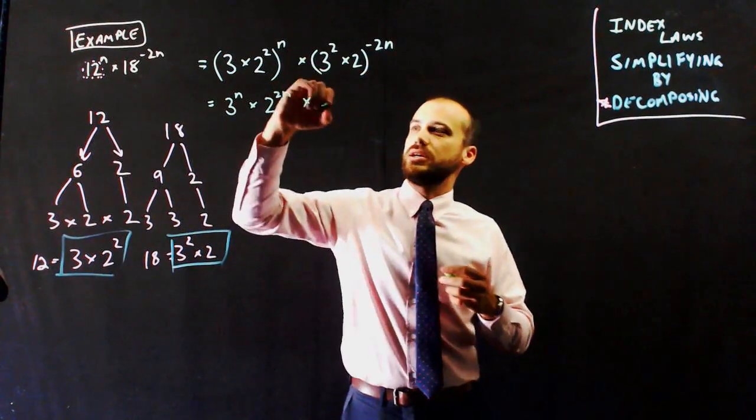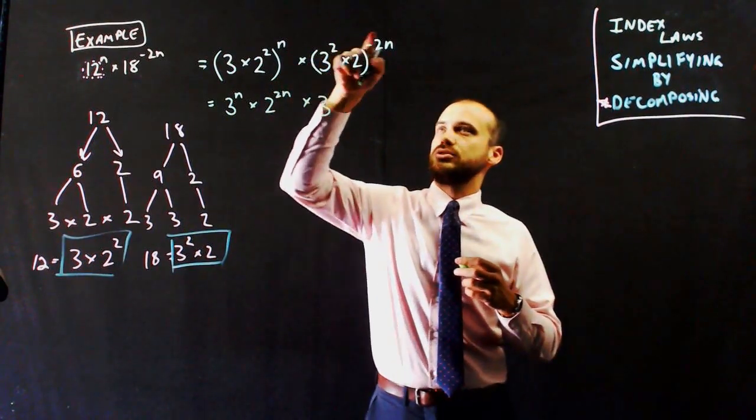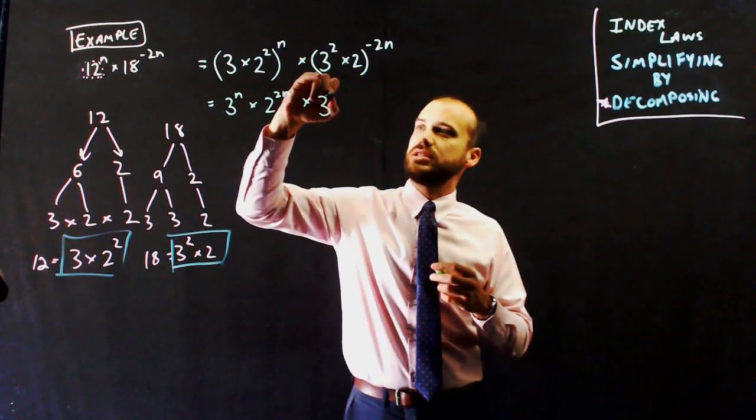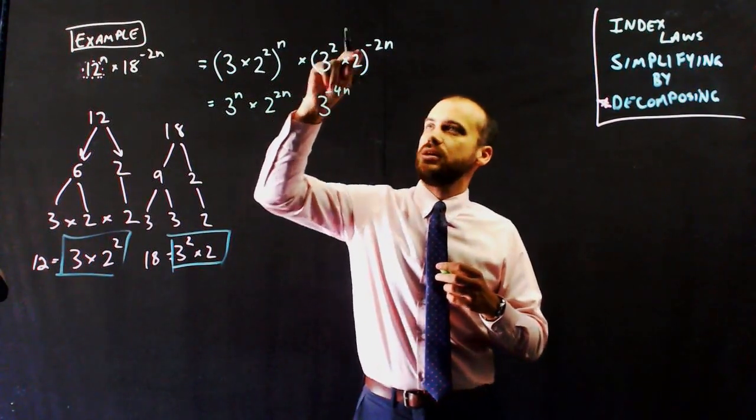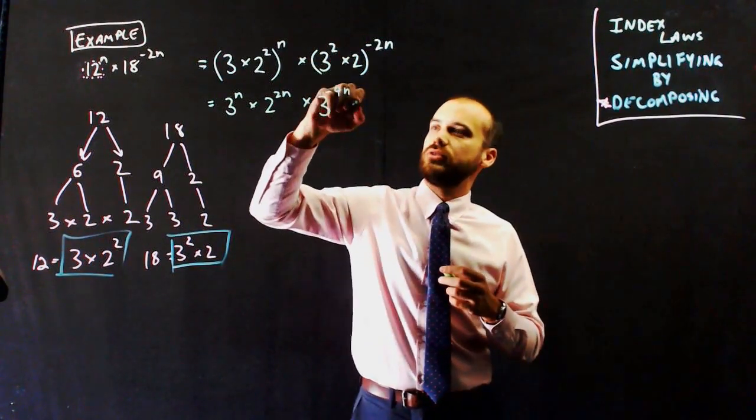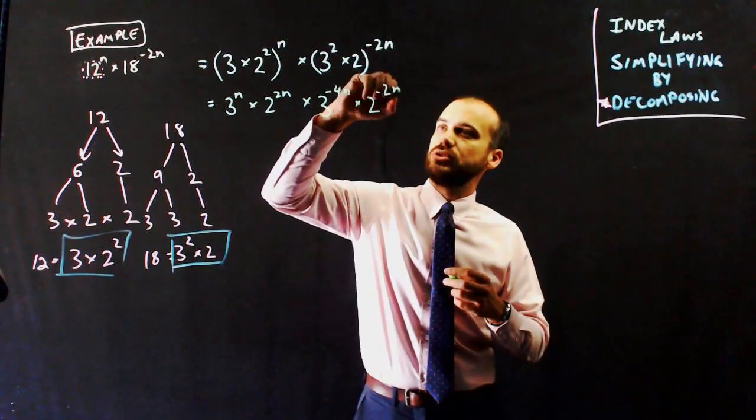I can do the same here. 3 to the 2 times negative 2n, that's going to be 3 to the negative 4n, and 2 to the power of negative 2n.